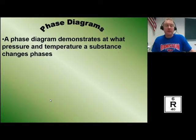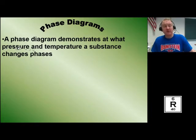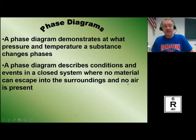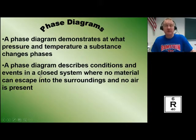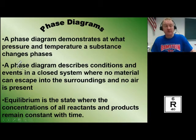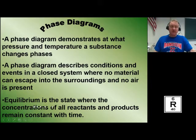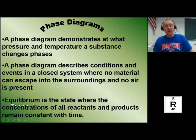Phase diagrams are very helpful when demonstrating what state of matter a substance will be in based on current pressure and temperature. Phase diagrams vary for every molecule and every element — they each have their own unique phase diagram. Phase diagrams describe conditions in a closed system where no material can escape into the surroundings and no air is present. A closed system means there is no exchange — like a bottle with the cap on it. Equilibrium is a state where the concentrations of all reactants and products remain constant with time.